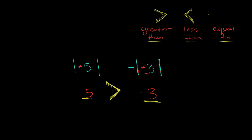So the last step is just reading this. Just like reading books or sentences, you always read left to right — and with this it's no different. So starting on the left side and reading that way, we say 5 is greater than negative 3. And that would be your answer.